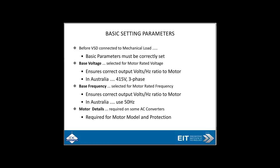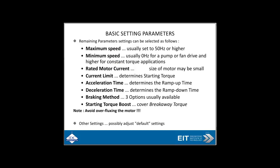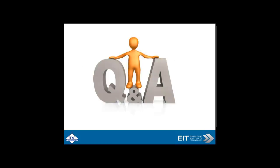Basic setting parameters: make sure parameters are correctly set — base voltage, base frequency, motor nameplate details as required. Other parameters include maximum speed, acceleration time, and deceleration time. These all need to be set up properly. So that's, in a nutshell, a few suggestions for your next variable speed drive project — troubleshooting, installation, pre-commissioning, commissioning, and troubleshooting. If you follow the steps required in the installation, you should have no problems and will be doing minimal troubleshooting.